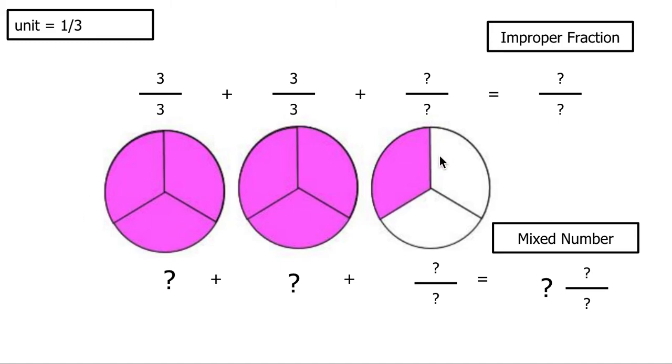Our last one, we have 1 piece shaded in with 1, 2, 3 pieces in the hole. So our answer, of course, needs a 3 as the denominator.